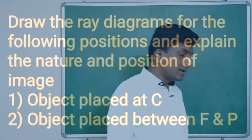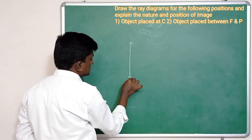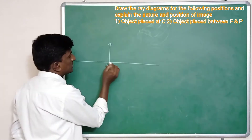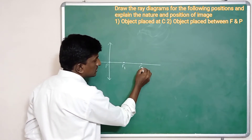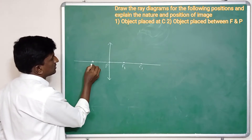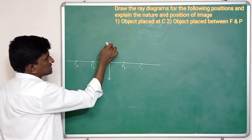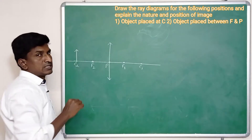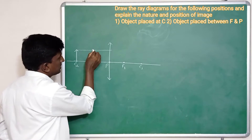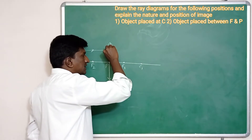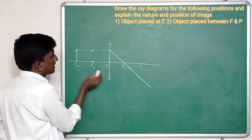Let us say this is the convex lens, with optical center, focus of the first surface, center of curvature of the first surface, focus of the second surface F2, and center of curvature of the second surface. If the object is placed on the center of curvature, where is the image formed? First, I am taking a parallel light ray incident on this convex lens, and after refraction the light ray passes from the focus.